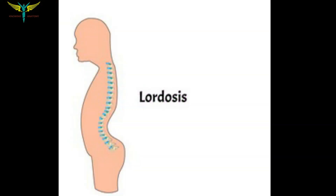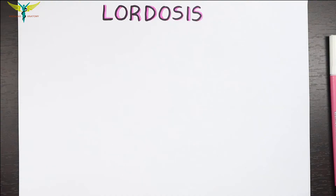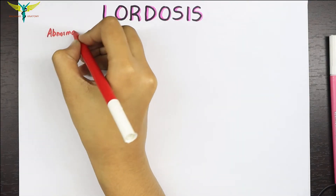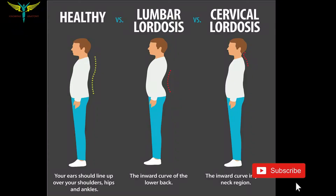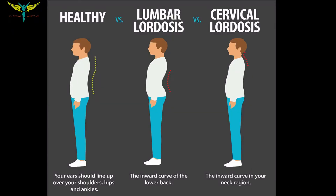Lordosis is an abnormal anterior-posterior curvature of the spine with forward convexity, or the inward curvature of a portion of the lumbar and the cervical vertebral column.